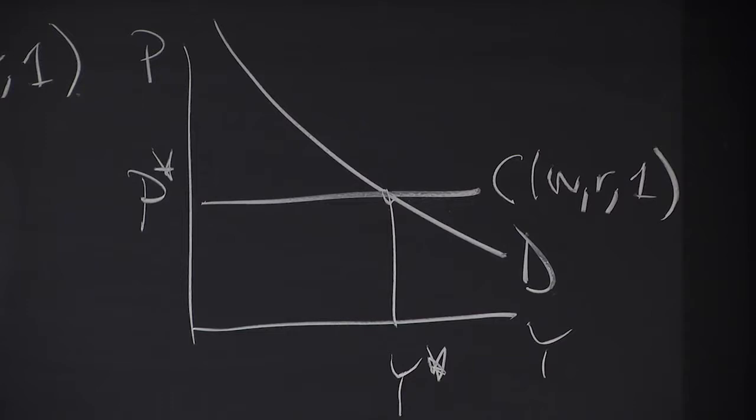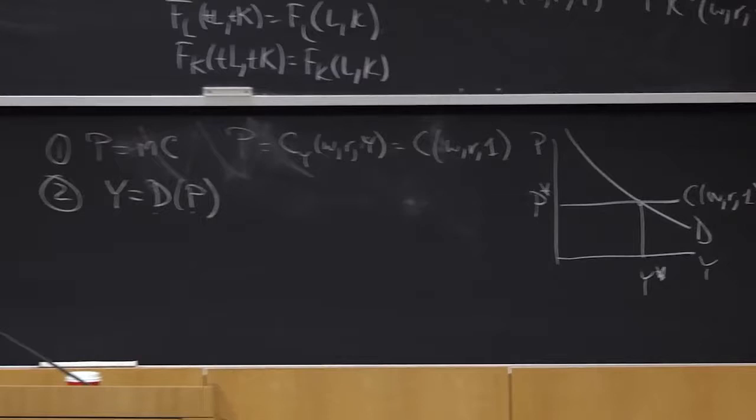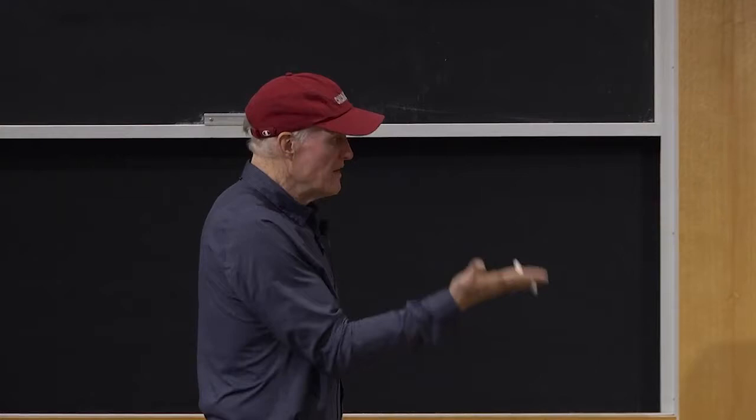So you can see when it's a constant returns to scale industry, the dichotomy. Basically, input cost determines the price. And once I've determined the price, demand determines output.